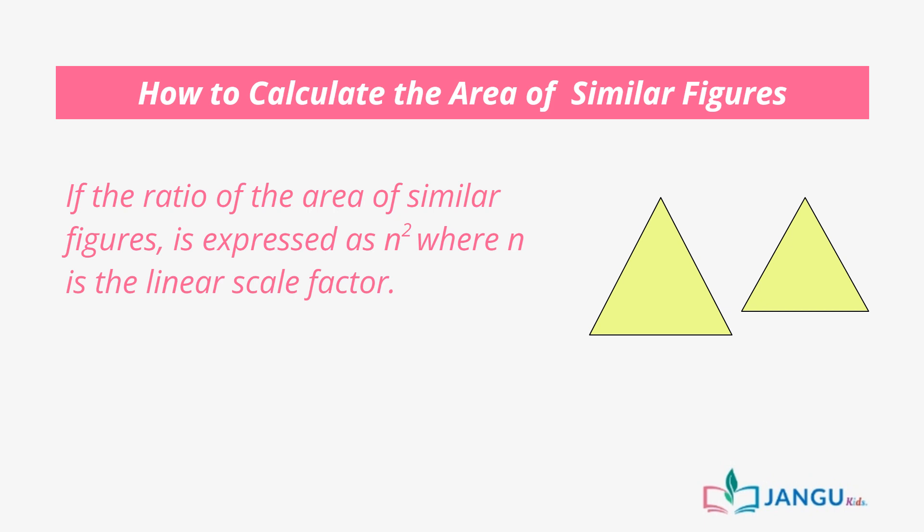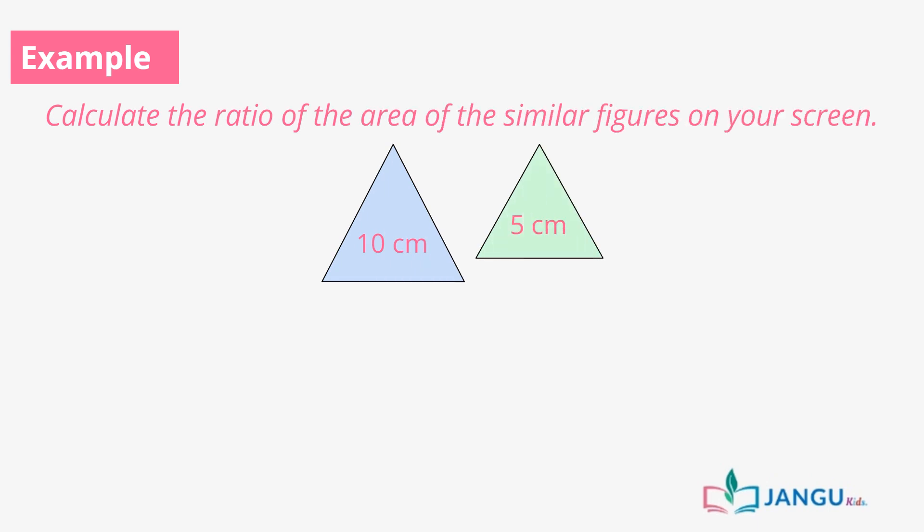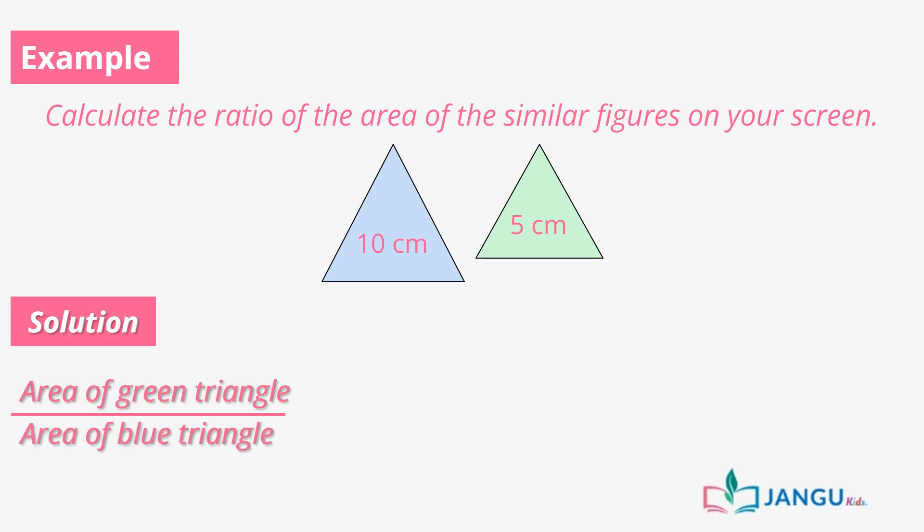Let's solve an example to get more clarity. Calculate the ratio of the area of the similar figures on your screen. To do this, we divide the area of the green triangle by the area of the blue triangle, which is 5 over 10 squared, which is simplified to 1 over 2 squared. Therefore, the ratio of the area is 1 over 4.